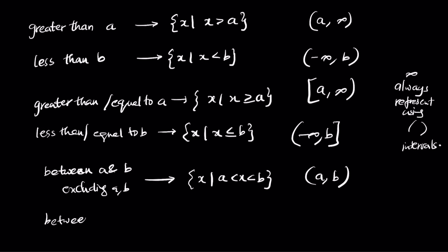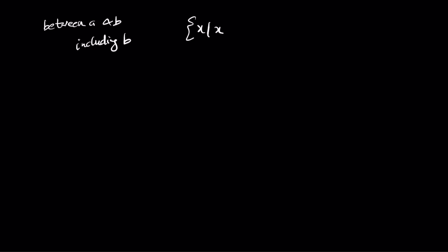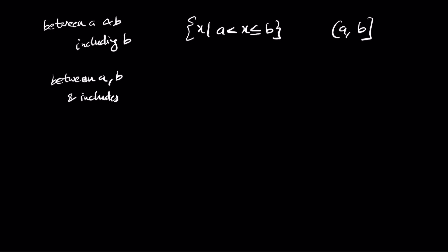Between a and b but including a only: x such that a less than or equal to x less than b, written as closed interval a comma b open interval. Between a and b including b only: a less than x less than or equal to b, written as open interval a comma b closed interval. Whichever one is included, write a closed interval next to it. Between a and b including both: a less than or equal to x less than or equal to b, so write closed intervals on both sides.